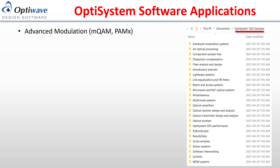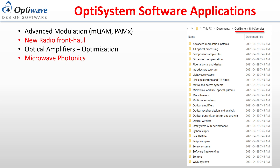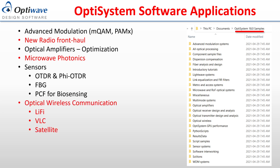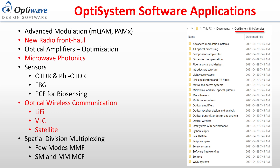Some applications include advanced modulation formats, new radio front-haul networks, optical amplifier optimization, microwave photonics, sensor applications, wireless communication, and the use of spatial division multiplexing. OptiSystem contains a full library of example files for each component implemented, and is an excellent resource for learning how to integrate individual components into full systems.